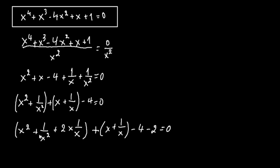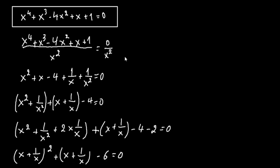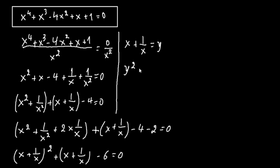Continuing, we have x plus 1 over x minus 4, and we must subtract 2 because we added 2 in the previous step. This equals 0. Using the known identity, this becomes x plus 1 over x, all squared, plus x plus 1 over x, minus 6 equals 0. We let x plus 1 over x equal y, so the equation becomes y squared plus y minus 6 equals 0.